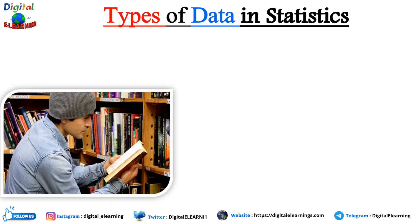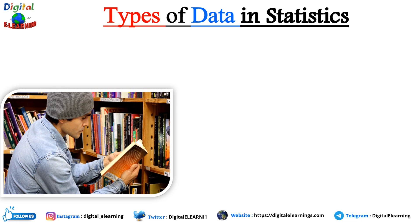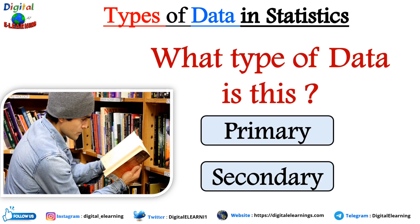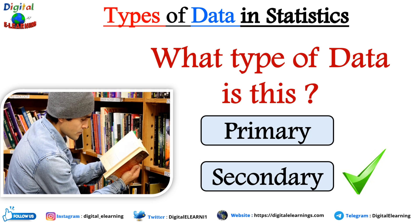Now look at this last example — he is reading a book. So what type of data is this? I guess you have now guessed it right. This is secondary data, because the information has already been collected by someone, which is analyzed and presented by the author, and he is just reading it. It is not firsthand data since it was created for a different purpose.